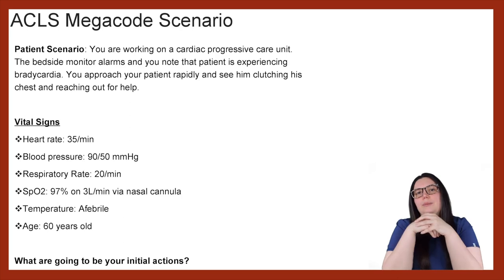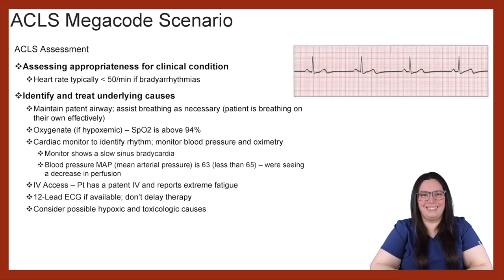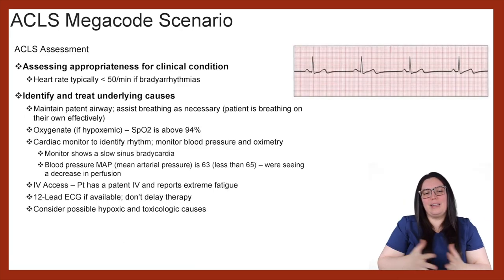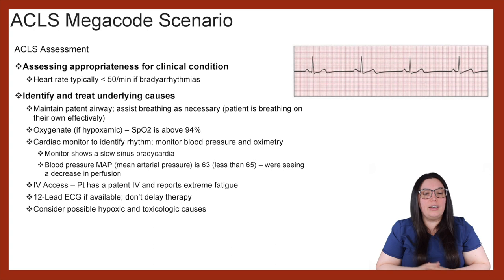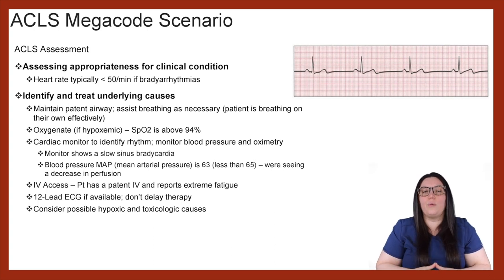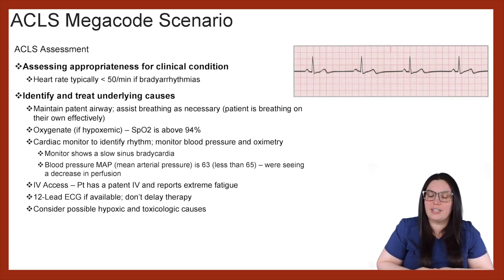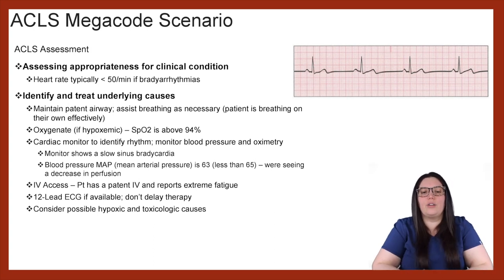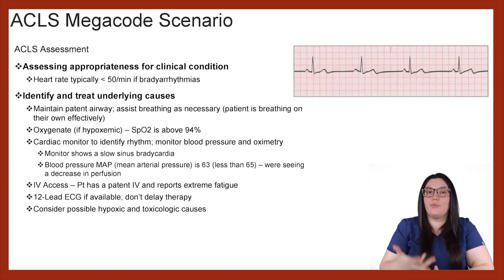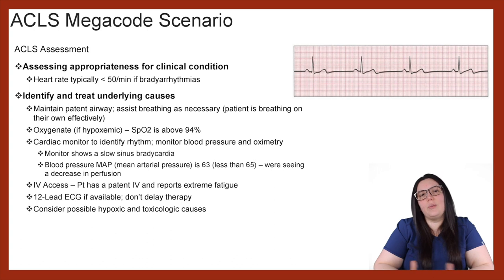What is going to be your initial actions? We're going to begin with our ACLS assessment, starting by assessing for appropriateness for clinical condition. This means that the heart rate is typically going to be less than 50 per minute to be considered a bradyarrhythmia. Next, we want to identify and treat the underlying cause.